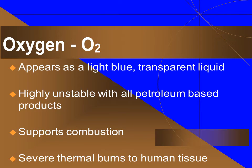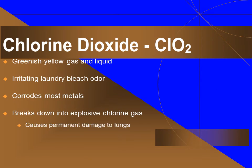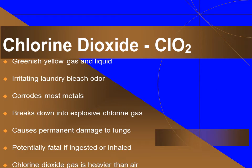Oxygen appears as a light blue, transparent liquid. It is highly unstable with all petroleum-based products. It supports combustion and can cause severe thermal burns to human tissue upon contact. Chlorine dioxide, or CLO2, is a greenish-yellow gas or liquid. It has an irritating laundry bleach odor. It corrodes most metals and breaks down into explosive chlorine gas. It causes permanent damage to the lungs and is potentially fatal if ingested or inhaled.